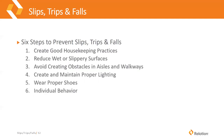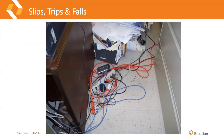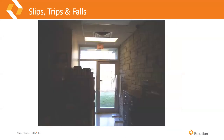Now we're going to talk about the six steps to prevent slips, trips, and falls. The first is to create good housekeeping practices: reduce wet or slippery surfaces, avoid creating obstacles in aisles and walkways, create and maintain proper lighting, wear proper shoes, and address individual behavior. Examples of hazards include cables in walkways, dimly lit entryways, and blocked egress points where file cabinets or signs obstruct emergency exits — creating both a blocked egress hazard and a tripping hazard.